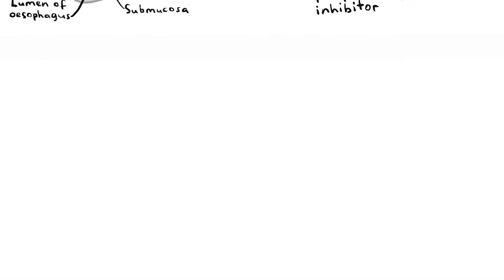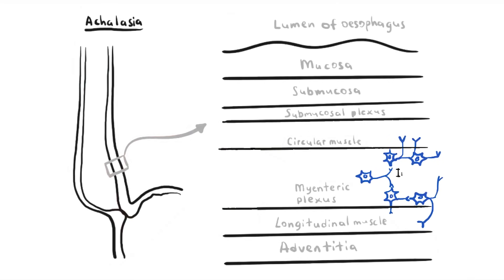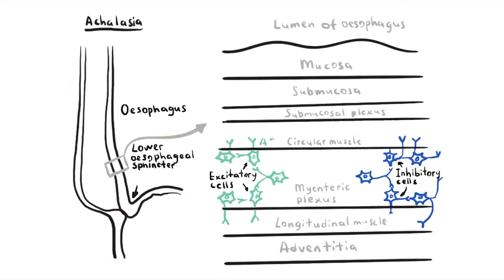The pathophysiology of achalasia is thought to be the result of loss of the inhibitory neurons in the myenteric plexus of the distal esophagus and the lower esophageal sphincter that leads to unopposed excitation. The excitatory cells in the myenteric plexus release the neurotransmitter acetylcholine, which causes smooth muscle contraction of the distal esophagus and the lower esophageal sphincter.